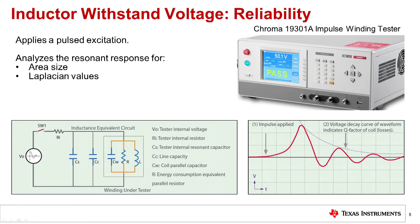Most inductor manufacturers use an impulse winding tester to guarantee each inductor exceeds its specified withstand voltage. The tester applies a pulsed excitation to the device and analyzes the resonant response for area size and Laplacian values.